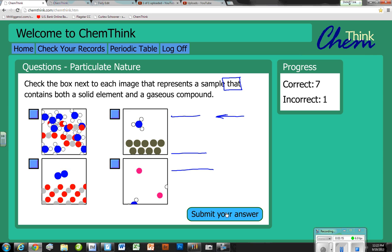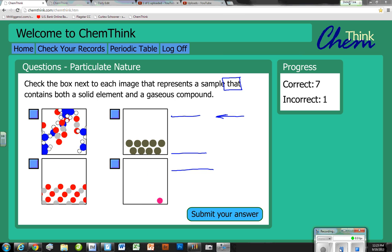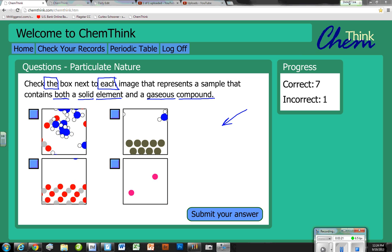Submit and let's get rid of the junk on the screen. Now I've prepared this screen for you to zero in on certain things to interpret the question. Check the box next to each - 'each' tells you there can be more than one answer. What do they have to qualify on? They have to represent a sample that has both solid element and gaseous compound.